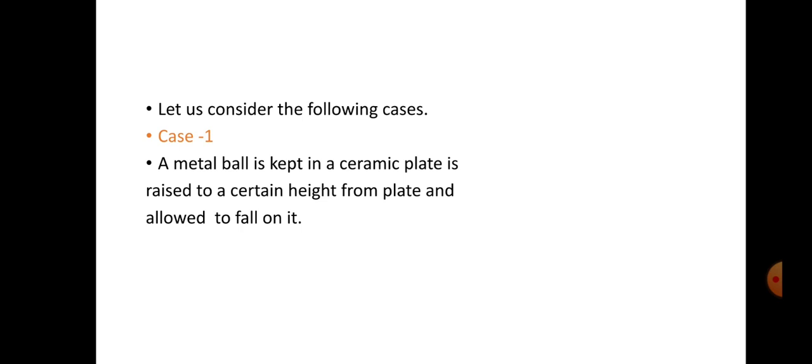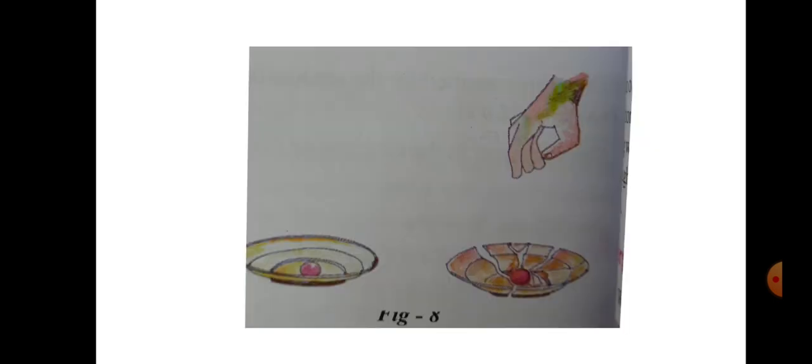Here case 1. A metal ball is kept in a ceramic plate. It is raised to a certain height from the plate and allowed to fall on it. See the picture here. A metal ball is at rest in a ceramic plate. In the second picture, a metal ball is raised to some height and allowed to fall on the ceramic plate.